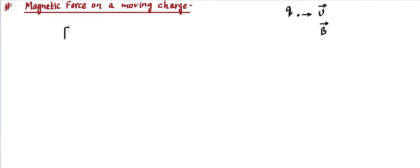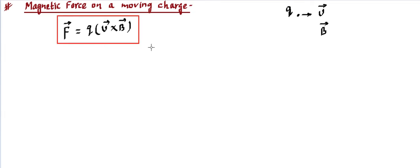This force on a moving charge is given by F vector — giving us both magnitude and direction — and it is equal to Q times the quantity V cross B. Since velocity and magnetic field are both vector quantities, their cross product is applied to find what force the particle experiences. So the force experienced by a moving charge is F = Q(V × B).